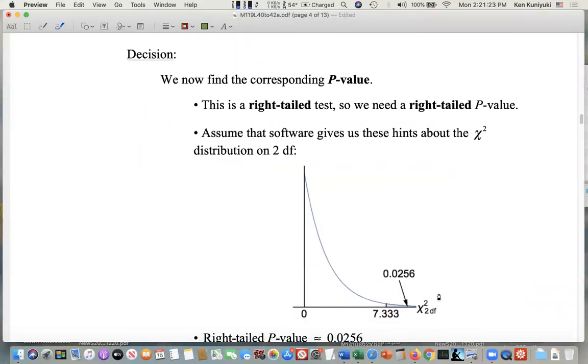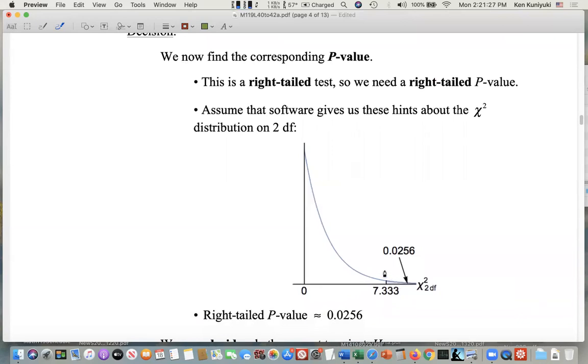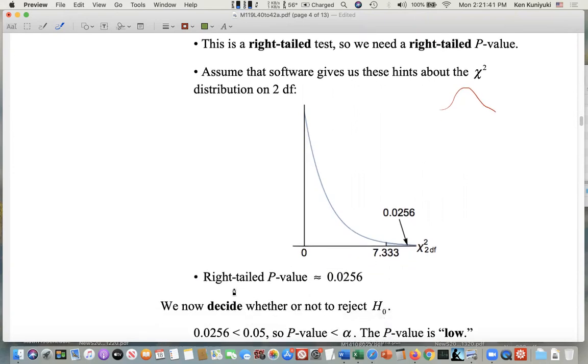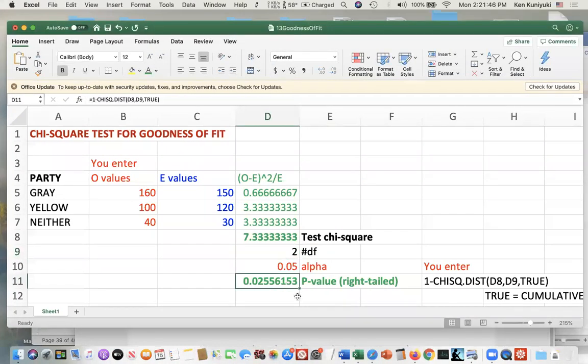Find the corresponding p-value. It's a right tail test, so we need a right tail p-value. By the way, the density curve for a chi-square on one or two degrees of freedom, it's a slide, not something like this. But don't worry about that. And what is the right tailed p-value? It turns out to be 0.0256. The right tail p-value turns out to be 0.0256, and my Excel spreadsheet confirms that.